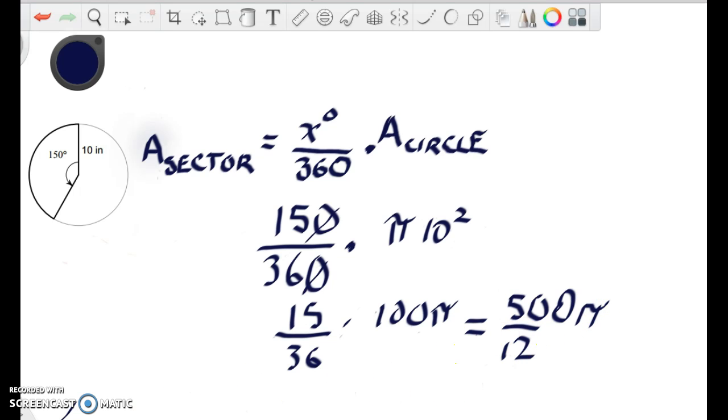and normally I would leave this in terms of pi, it kind of makes me cringe if I have to use 3.14 for pi, but we're going to get 125 pi over 3, and this ordinarily would be the final answer, and you would call it inches squared,